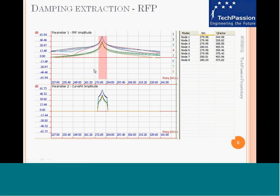RFP stands for rational fraction polynomial. The frequency response function is used to estimate damping for a particular resonant frequency or mode. The band shown signifies a set of points used as input to the rational fraction polynomial curve fitting algorithm. Using those data points, the mathematical model is fitted — it is a parameterization technique where the parameters are residue, natural frequency, and damping.